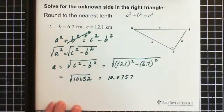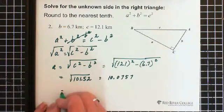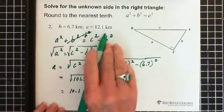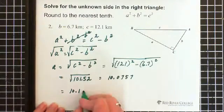You're asked to round it to the nearest tenth, so it's 10.1 kilometers.